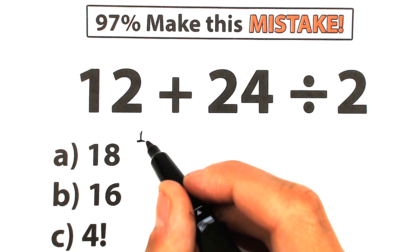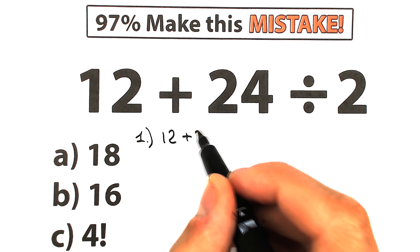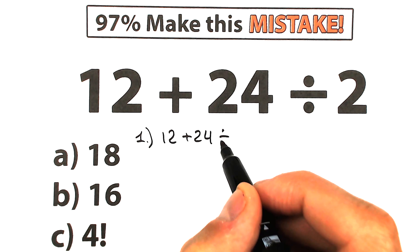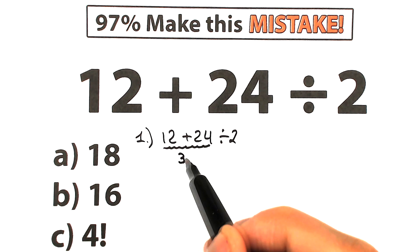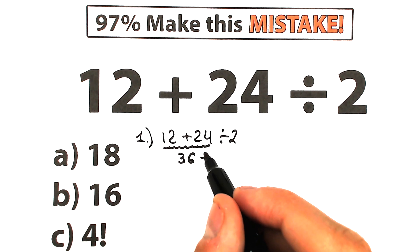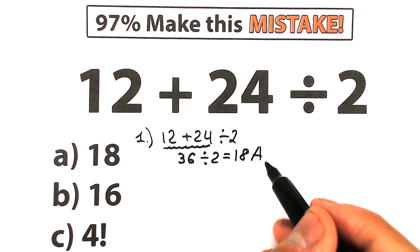First of all, I want to start with this first interpretation. Just take a look closely at this first interpretation. So we have 12 plus 24 divided by 2. And if you look closely at our expression, from left to right, 12 plus 24 gives us 36, and 36 divided by 2 gives us 18. And we have this option, this is option A.